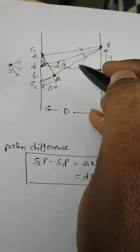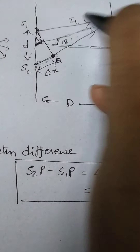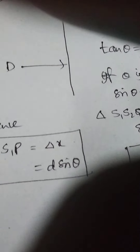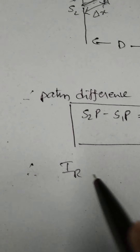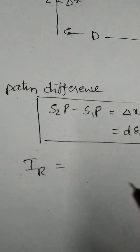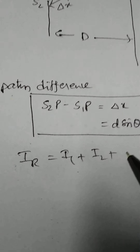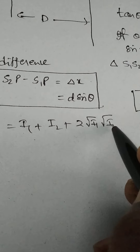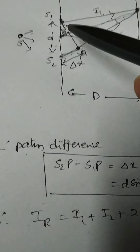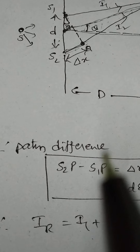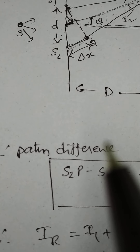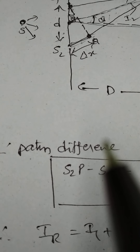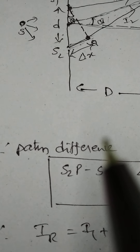Now, resultant intensity. Let the intensity from S1 be I1 and from S2 be I2. These two interfere to produce bright or dark bands at P. The resultant intensity IR = I1 + I2 + 2√(I1·I2)·cosφ, where φ is the phase difference between the two light rays. S1 and S2 are called coherent light sources, meaning they have the same frequency, same wavelength, and maintain a constant or zero phase difference.